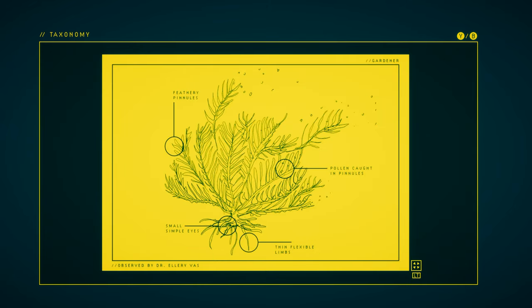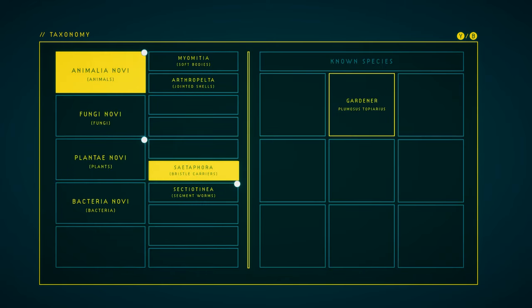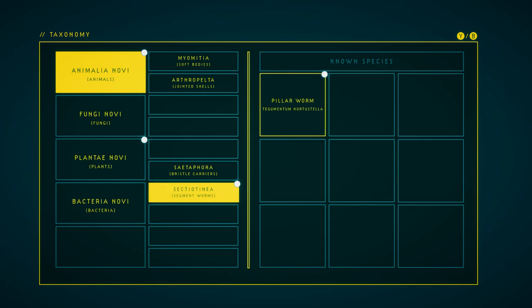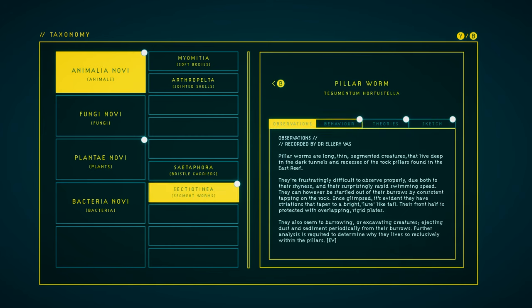That is so cool! Yeah, at first glance, they kind of just look like an underwater plant. Just kind of a little bushy thing, but then at the bottom, they have limbs and eyes. Ah, got the full thing for the pillar worms.